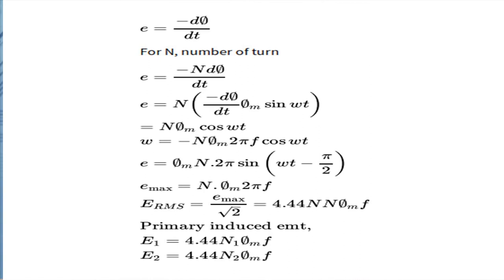For maximum EMF, sin(ωt − 90°) = 1, giving the maximum EMF induced as E_max = 2πf N₁ φm. The RMS value of EMF induced in the primary winding is E_max divided by √2, which gives E₁ = 4.44 f N₁ φm, where f is the frequency, N₁ is the number of turns, and φm is the maximum flux.